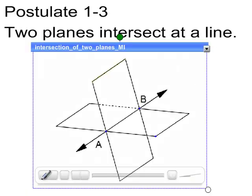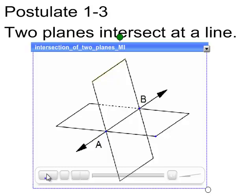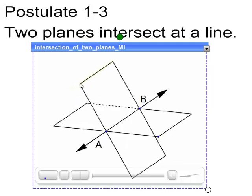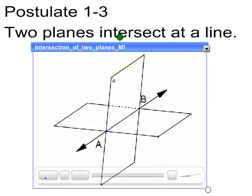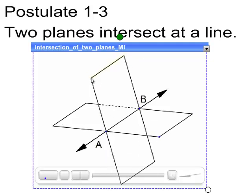Postulate 1-3: two planes intersect at a line. And I'm manipulating this image where we've got two planes and notice that no matter what I do, they intersect at a line.